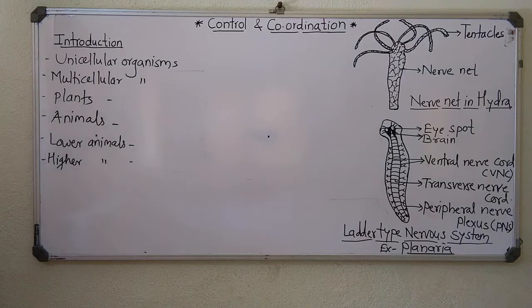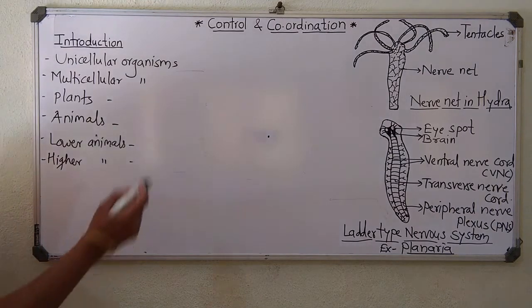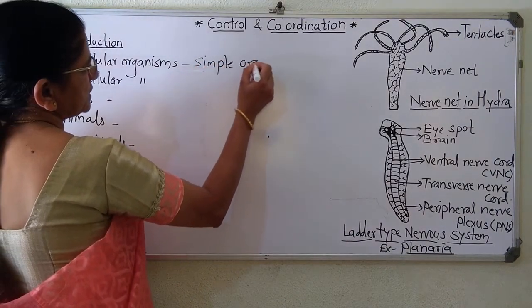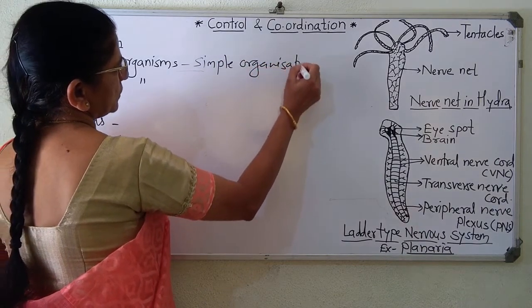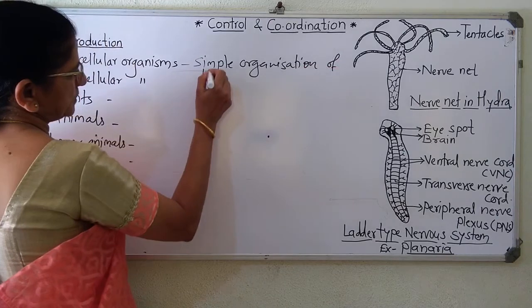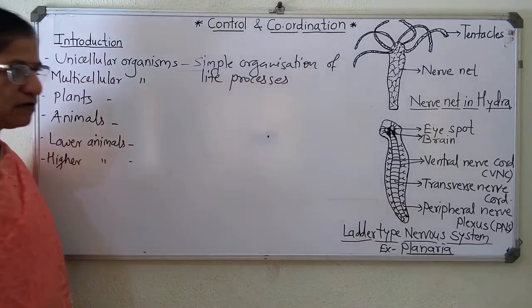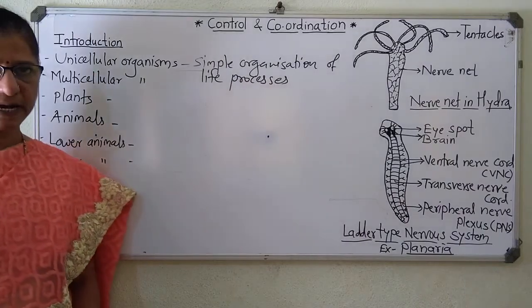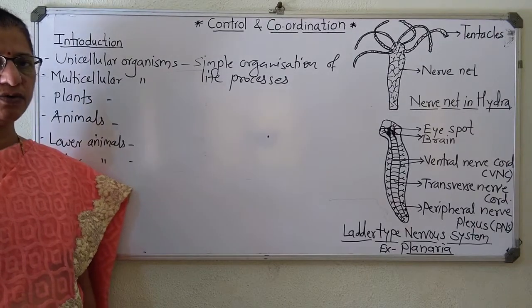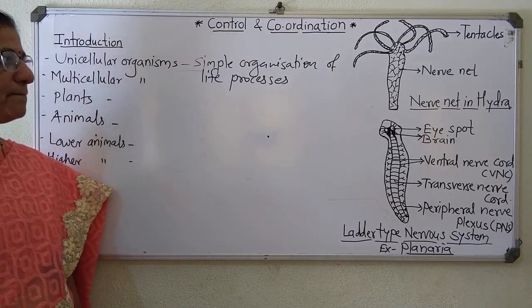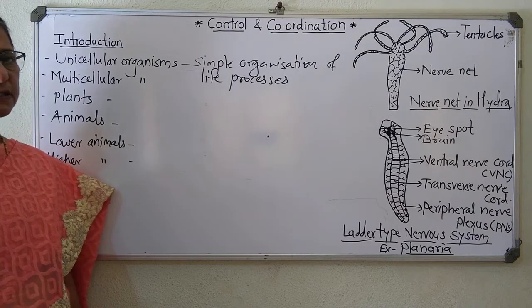In unicellular organisms, they have simple organization of their life processes. For example, amoeba and paramecium — they are unicellular organisms and they carry out digestion, excretion, respiration, etc. These life processes are very simple ones.